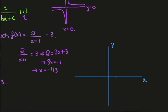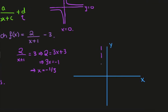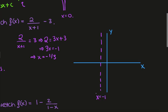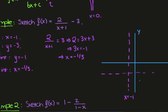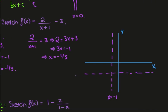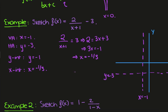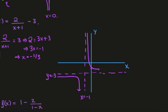Let's put all this into a graph. We have the vertical asymptote at x equals minus 1, the horizontal asymptote at y equals minus 3, the y intercept at minus 1, and the x intercept at minus 1 third. And that's all we need to sketch the graph.